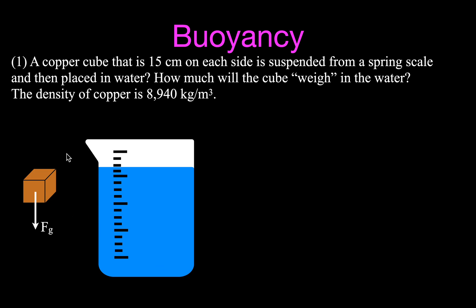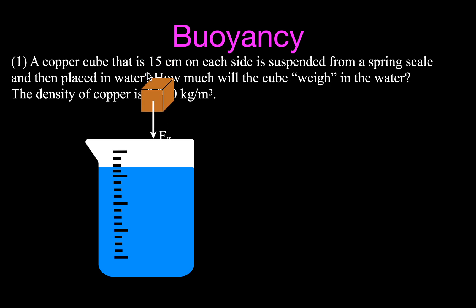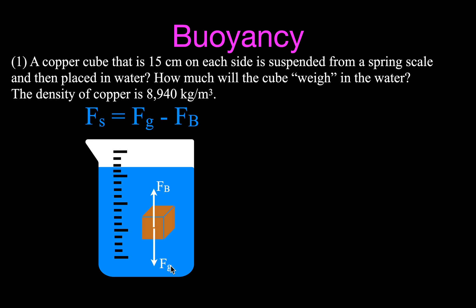Example number one: we have a copper cube that is 15 centimeters on each side. We are going to hang it from a spring scale and place it in water. We want to know how much the cube will 'weigh' — really its apparent weight when in water. The density of copper is 8,940 kilograms per cubic meter. The weight pulls down (Fg) and the buoyant force pushes up, so the force on the spring scale, Fs, is the weight minus the buoyant force.